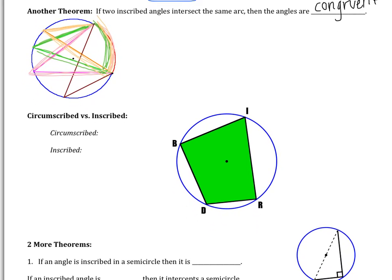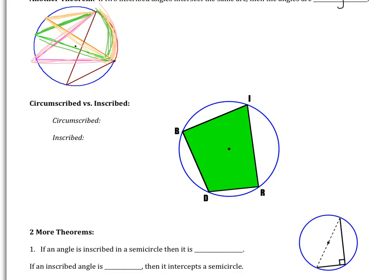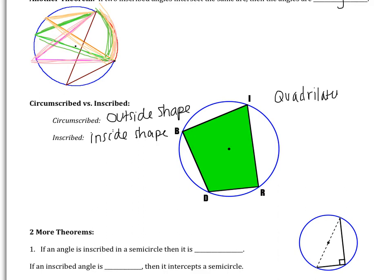We're going to use that idea to talk about inscribed and circumscribed. We have quadrilateral BIRD with a circle drawn around it. Circumscribed refers to the outside shape, and inscribed refers to the inside shape. So quadrilateral BIRD is inscribed in a circle — it's inside the circle. You could also say there is a circle circumscribed around BIRD, meaning a circle drawn around the outside.